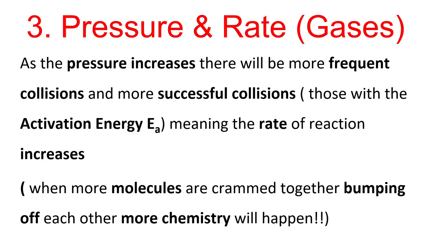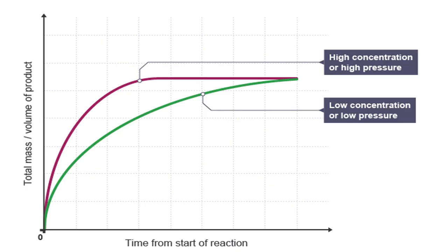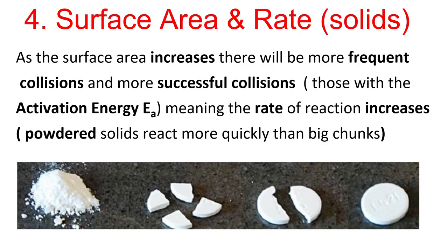Next, pressure and rate. This is all to do with gases, because gases can be compressed — solids and liquids cannot be compressed. Again, it's the same answer: more frequent collisions, more successful collisions, and the rate of reaction will increase. More particles per unit volume, so more collisions per unit time. That's the phrasing you must use to hit the marks. Here's a graph showing that, with red being high pressure and green being low.